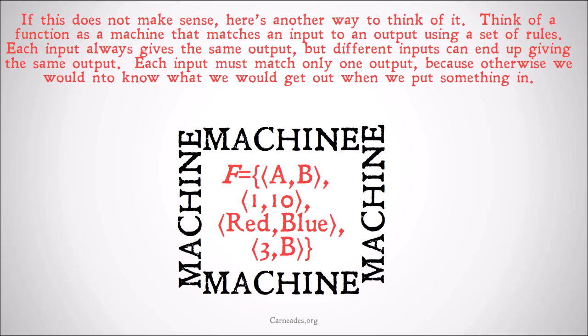So think of it like this. Our function is the machine, the class of the ordered pairs (a,b), (1,10), (red,blue), and (3,b). When I put a into this machine, I get out b, because the function of a, the value a is paired with, is b. So the function of a is b.